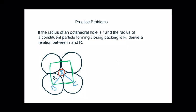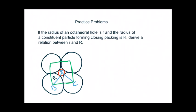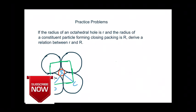The first problem: if the radius of an octahedral hole is r and the radius of the constituent particle forming the close packing is capital R, derive a relation between small r and capital R. So we are asked to find a relation between the radius of an octahedral hole and the radius of a constituent particle forming the close packing.